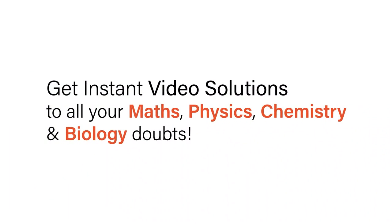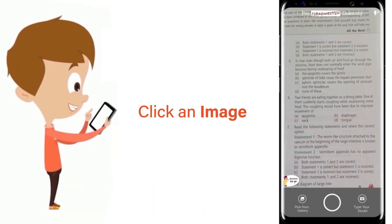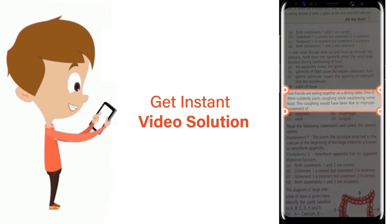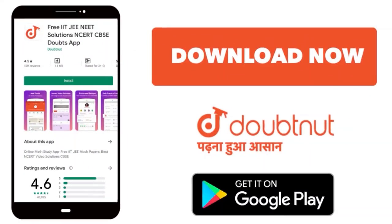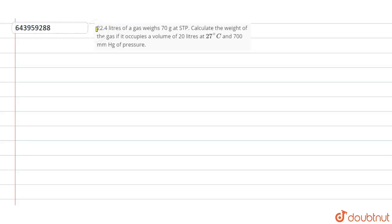With Doubtnet, get instant video solutions to all your maths, physics, chemistry and biology doubts. Just click the image of the question, crop the question and get instant video solution. Download Doubtnet app today. So, 22.4 liters of a gas weighs 70 gram at STP.